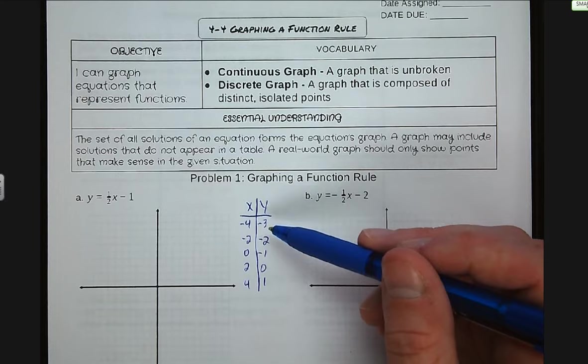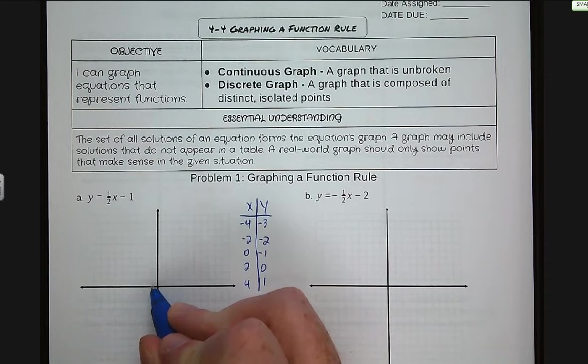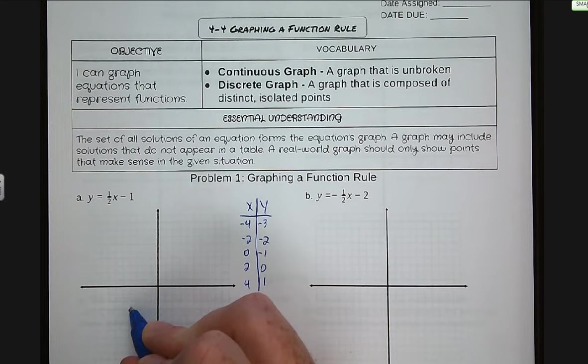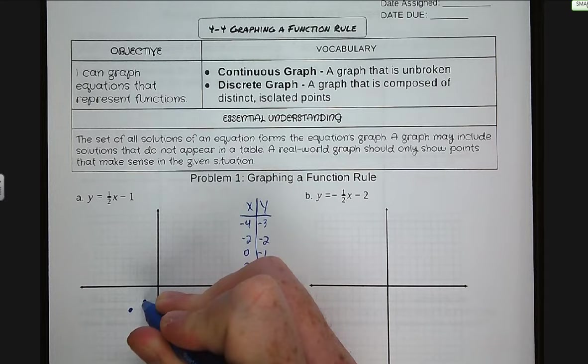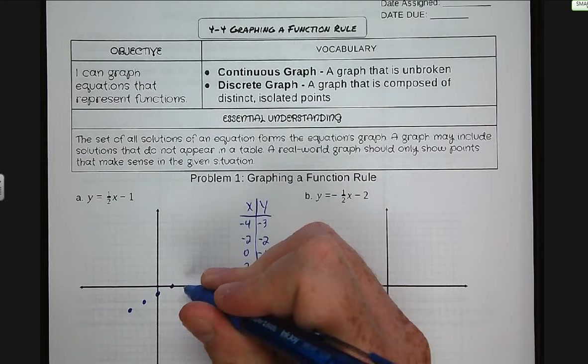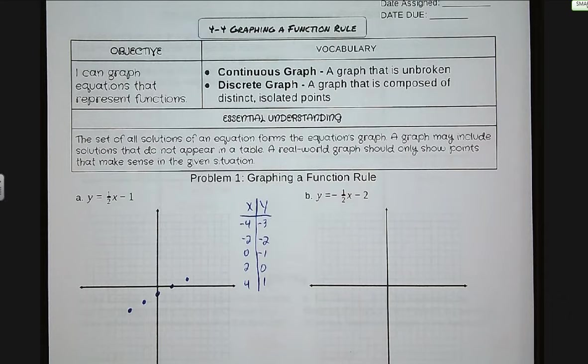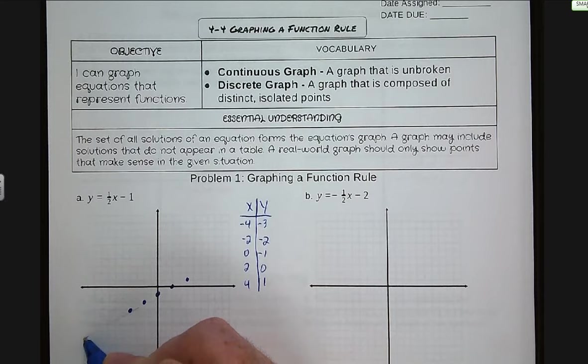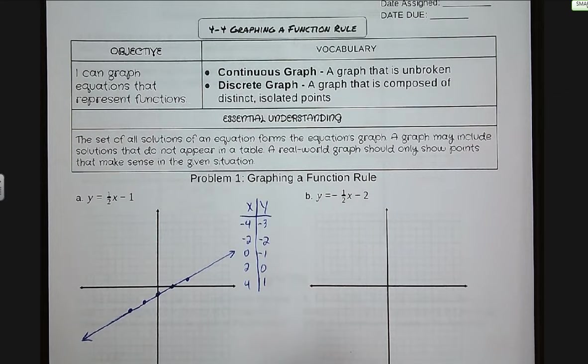We have a point at negative four, negative three; negative two, negative two; zero, negative one; two, zero; and four, one. What you should do on these is make sure that you draw a nice straight line all the way to the edges of your graph.